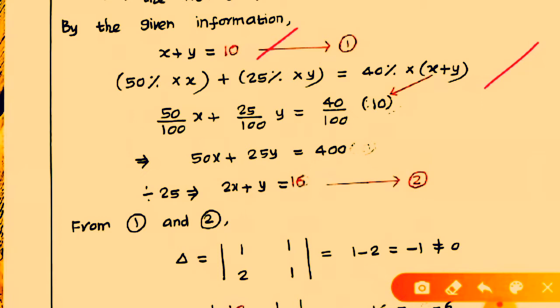From the data, 50% acid content is X liters plus 25% acid content is Y liters. So if we add these to get 40% acid content: 50% can be written as 50 divided by 100 into X, plus 25 divided by 100 into Y. That equals 40%, which is 40 divided by 100. X plus Y is 10 liters, so that means 10.